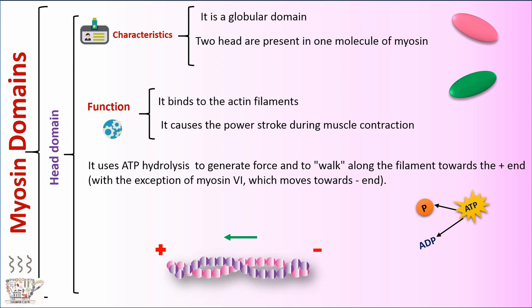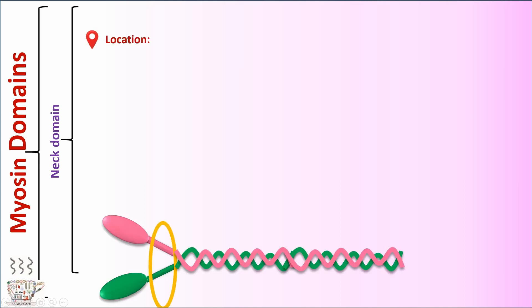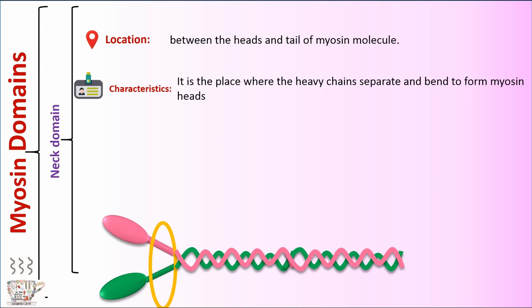The second domain is neck domain. It's located between the heads and tail of myosin molecule. It's the place where the heavy chains separate and bend to form myosin heads.